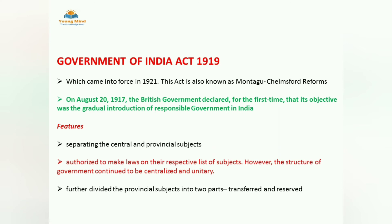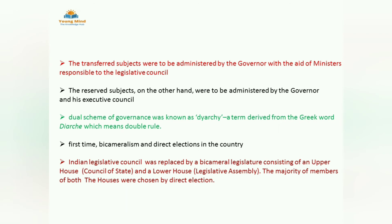These provincial subjects were further divided into transferred and reserved subjects. Transferred subjects were administered by the Governor with the help of ministers who were responsible to the legislative council — these were less important subjects. Reserved subjects were also administered by the Governor, but the helping team was the executive council — more important subjects were in the reserved category. This dual system of government is known as Dyarchy, a Greek word meaning double rule — one at central level and another at provincial level.